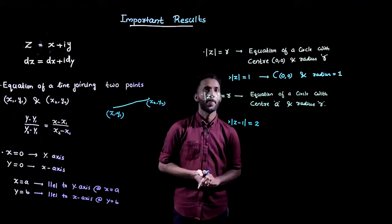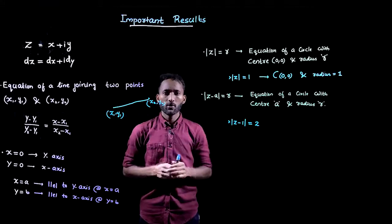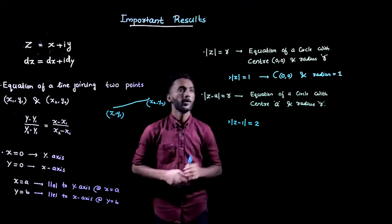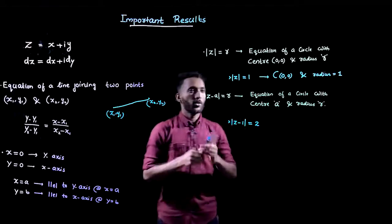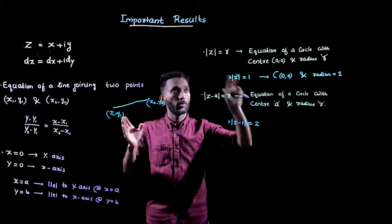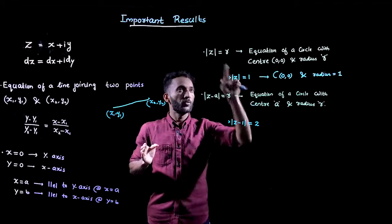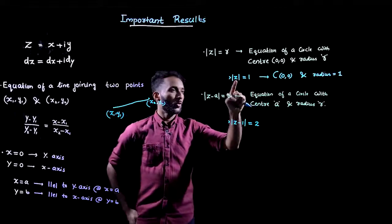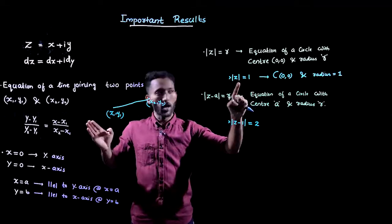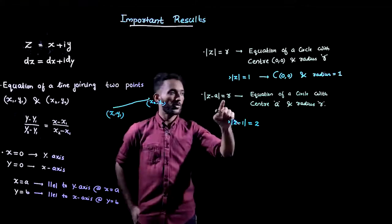Next, the modulus of z equal to r — that is, |z| = r — is the equation of a circle with center at the origin and radius r. For example, if you consider |z| = 1, comparing with the standard form |z| = r, you get that |z| = 1 is an equation of a circle with center at the origin and radius 1.